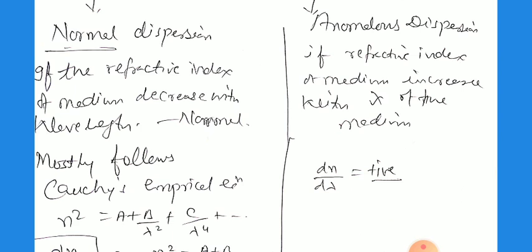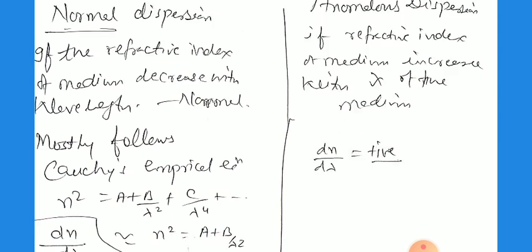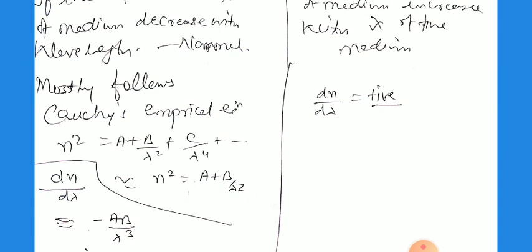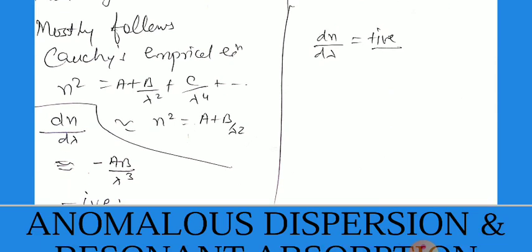As discussed in class 12, this follows Cauchy's formula: n² = A + B/λ² + C/λ⁴, where A, B, C are constants, approximated as n² ≈ A + B/λ². If you calculate dn/dλ for normal dispersion, it equals −2B/λ³, giving the wavelength dependence of the refractive index. This is related to normal dispersion.